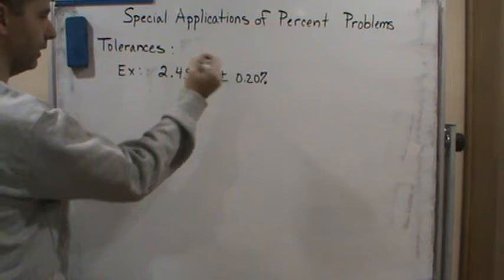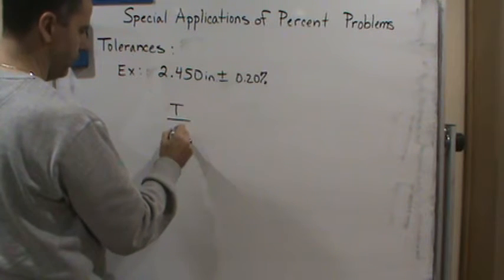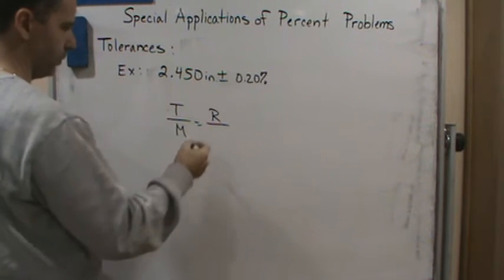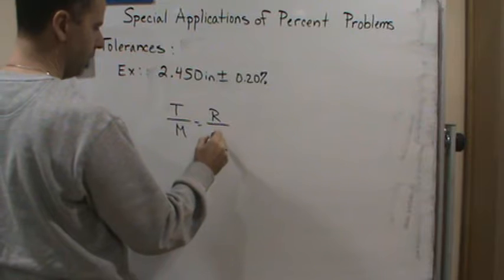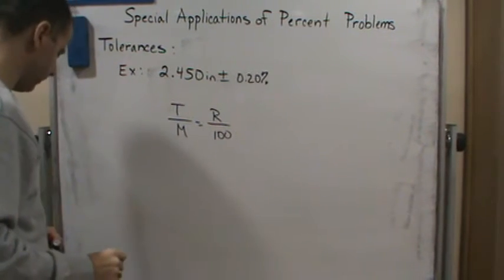So again, I'm going to set up the proportion, so it's going to be the tolerance limit over the measurement equals the percent tolerance, or the rate, the percent tolerance over 100. And now this time, I'm solving for T.